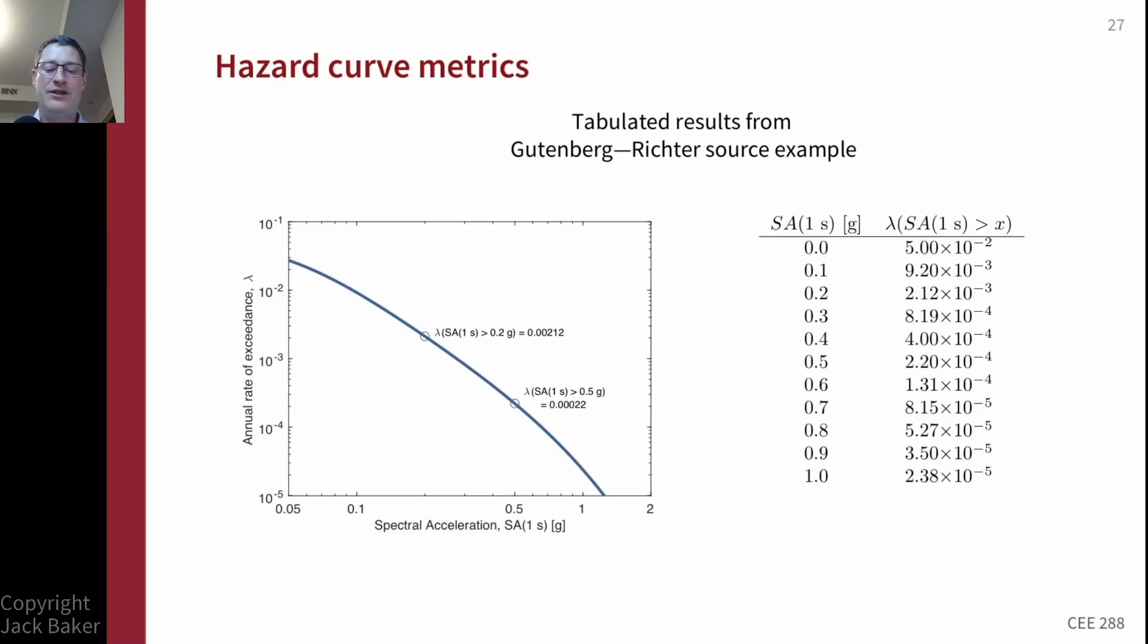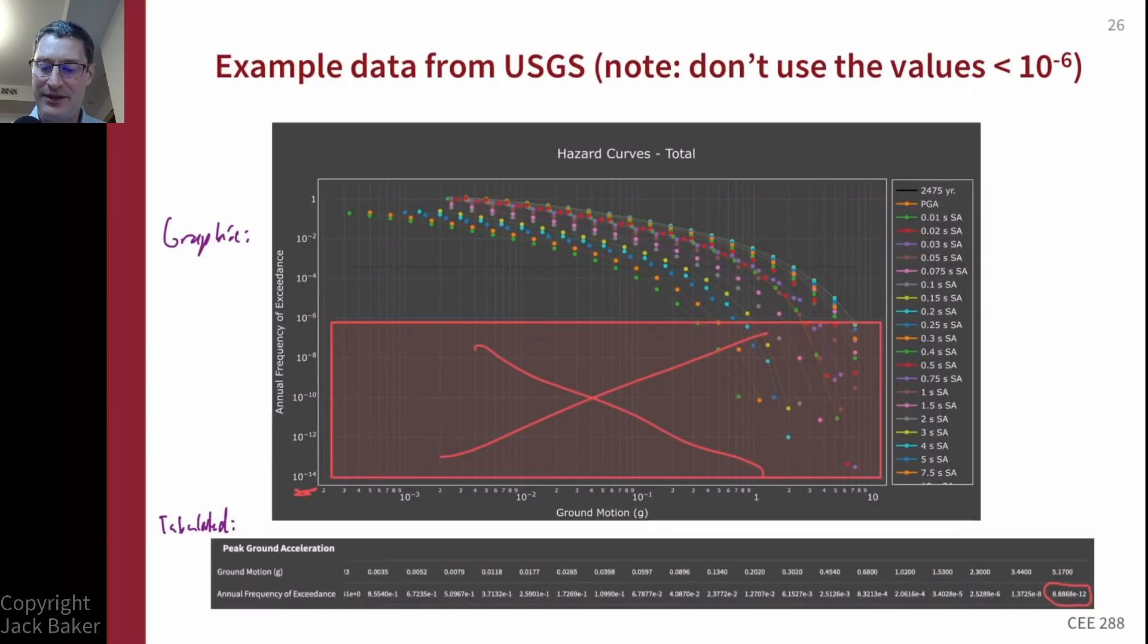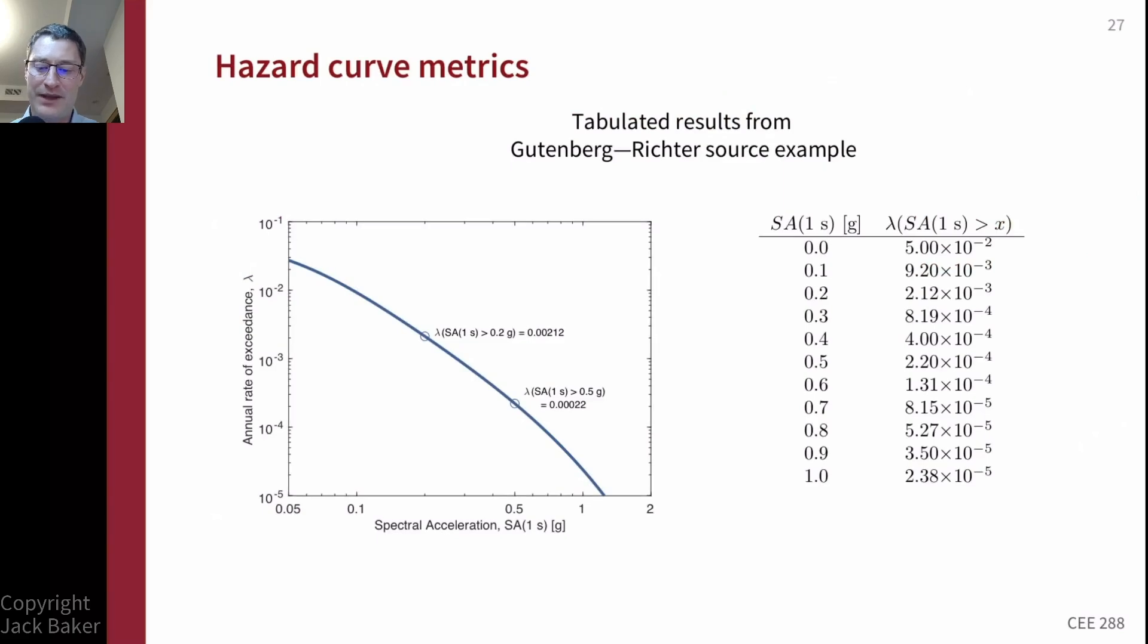One last topic I wanted to touch on in this video is a particular calculation. And maybe I should even note it on this previous slide, but the very top entry in the legend, we have this 2,475 year. This is a return period. And some of our building code applications use that return period as an anchor. And that's the ground motion intensity that's exceeded with 2% probability in 50 years. It's sitting down in here. So it's four times 10 to the minus four is the rate. And so you can see we've got these tabulated values for these hazard curves, but we will sometimes want the intensity level with four times 10 to the minus four rate of exceedance. So we have to do some interpolation between the points that are given to us to get that.